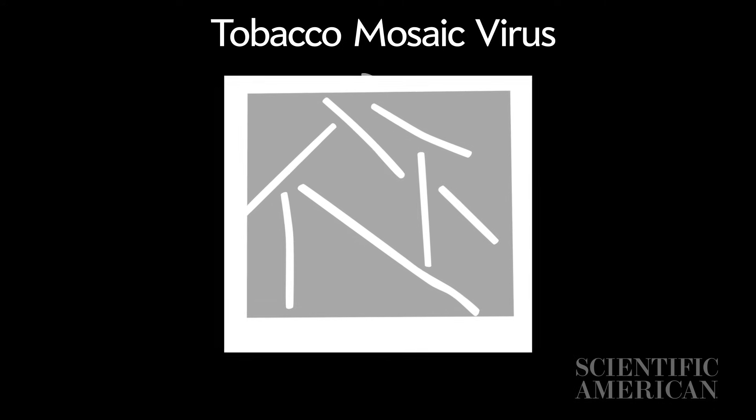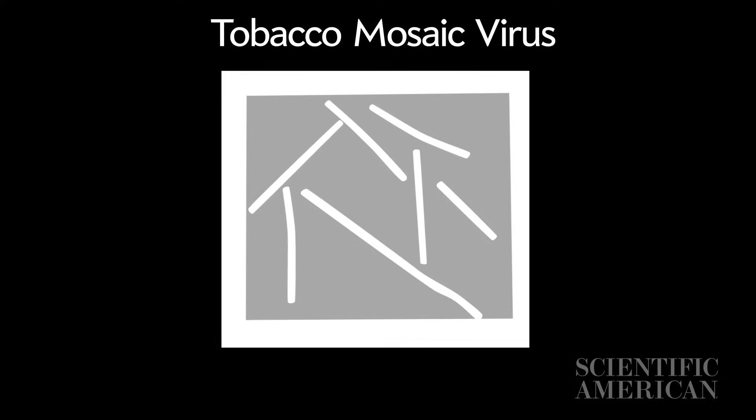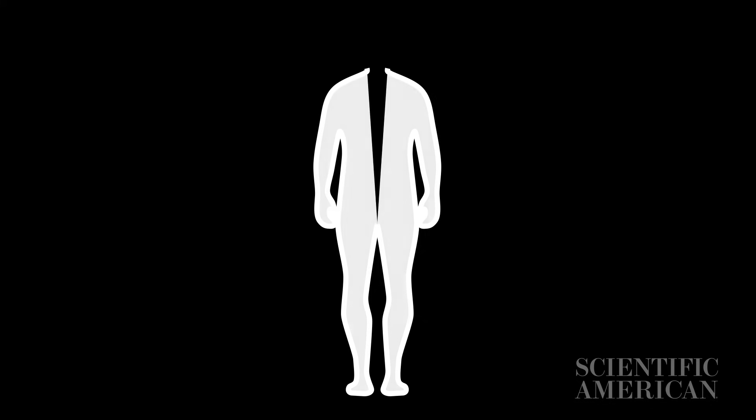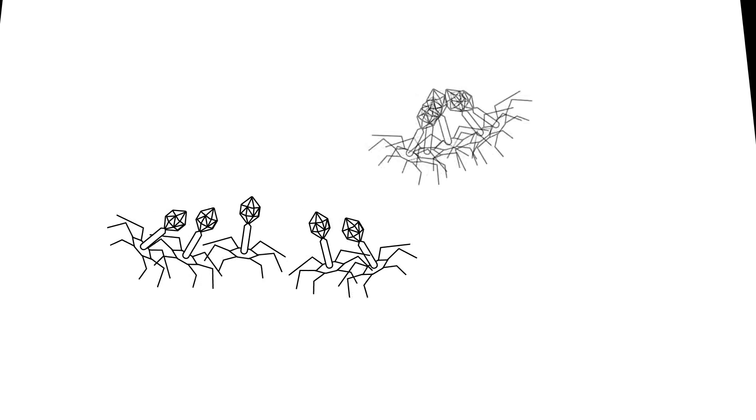Once we could see viruses, we started to realize that they were everywhere, including inside our own bodies. Viruses have replicated inside humans throughout our evolution. That's why about 8% of the human genome is derived from viruses, remnants of infections in our ancient ancestors.